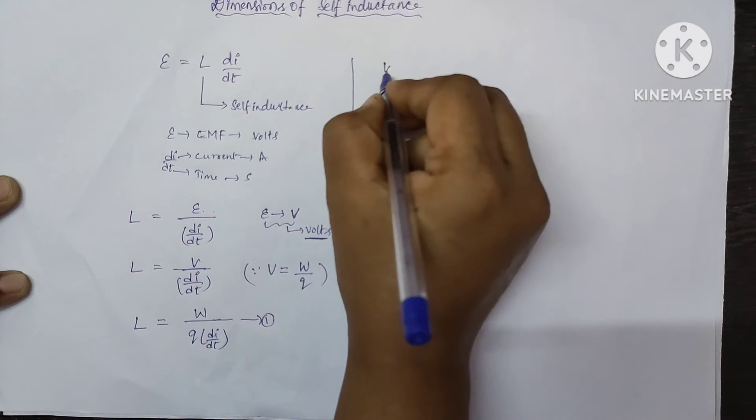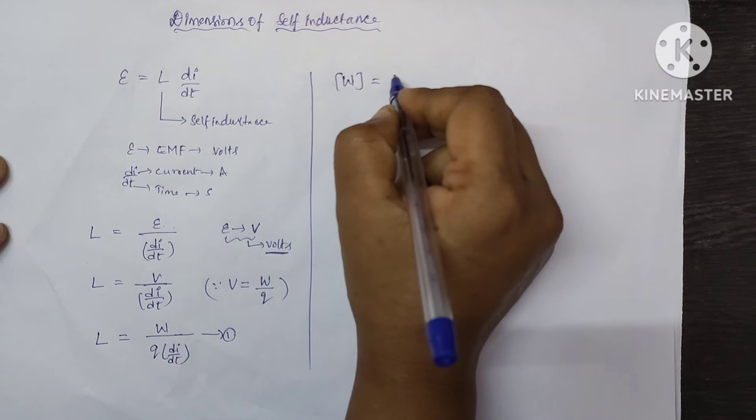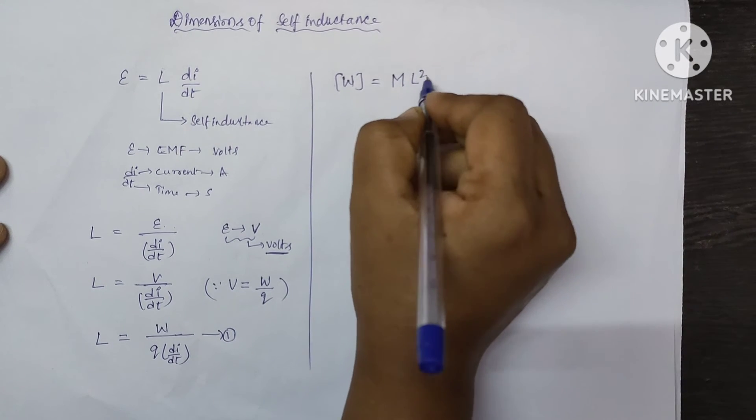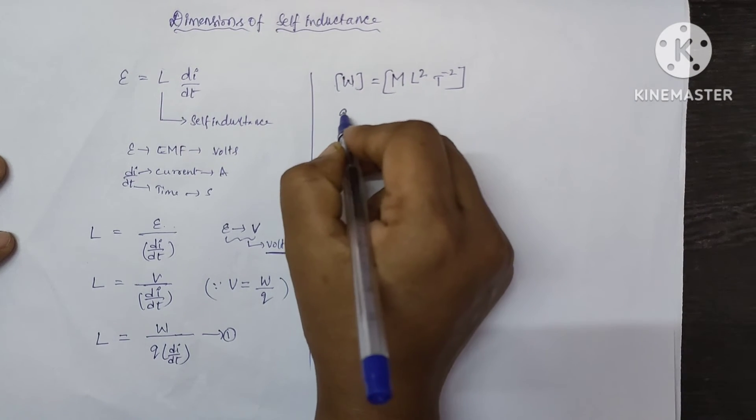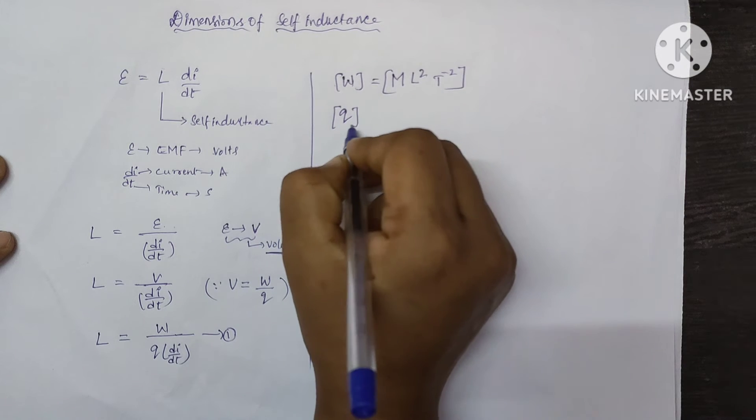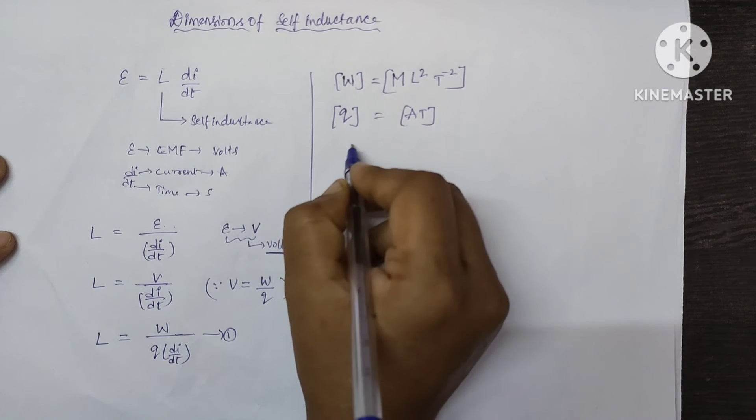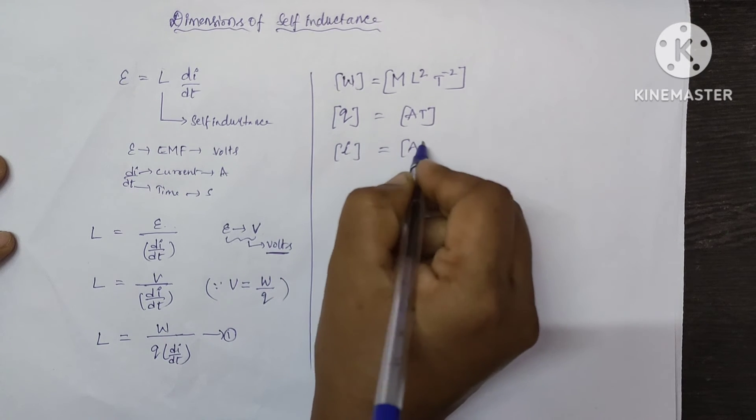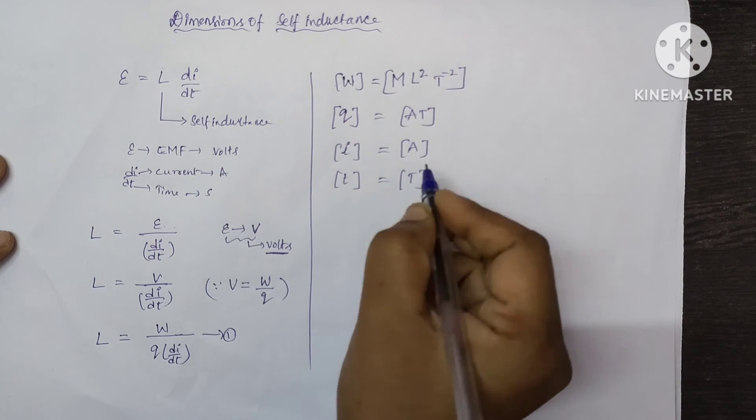Let us write the dimensions formula of work done. Directly I am writing. If you want, I will give the link in the description box. Here M L square T power minus 2, and dimensions of Q charge is AT, and the dimensions of current I equal to ampere, and the dimensions of time is capital T.